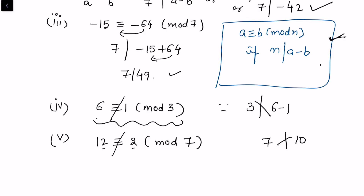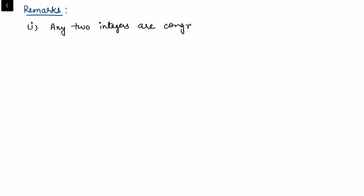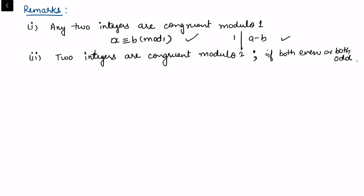Let's note some obvious remarks. Any two integers are congruent modulo 1, because 1 divides every integer — so a ≡ b (mod 1) always holds. A second remark: two integers are congruent modulo 2 if they are both even or both odd.